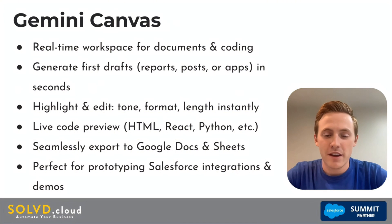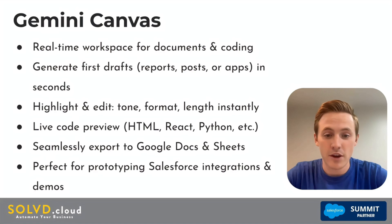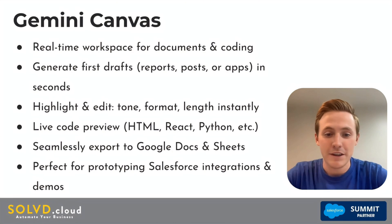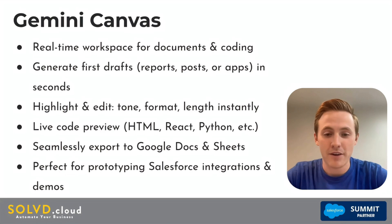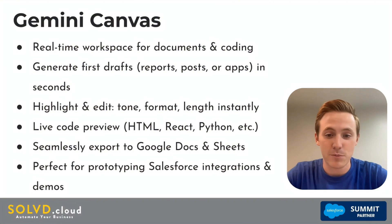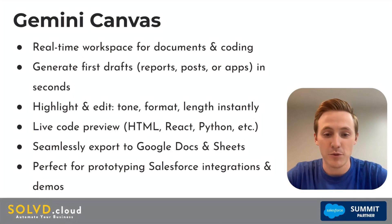When it comes to Gemini's AI Canvas tools, we see a lot of similarities with ChatGPT but a few key differences. Features include a real-time workspace — good for documents and coding, generating first drafts, and highlighting and editing. We can change between different tones, and it provides a live code preview whether you're coding in HTML, React, or Python. A huge key functionality of Gemini's Canvas is the ability to seamlessly export to Google Docs and Sheets, which can be a huge advantage especially if you use Google's workspace ecosystem.